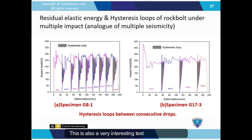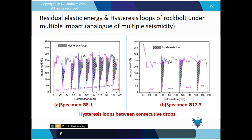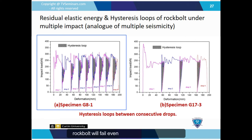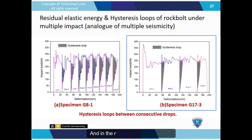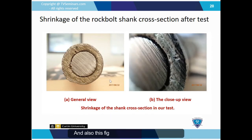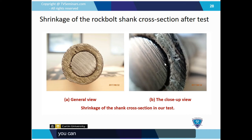This is a very interesting test result showing the amount of energy stored in the rock bolt at each drop. The left figure shows several drops on the G8 rock bolt, and at each stage, energy is stored in the rock bolt — meaning after several stages of energy storage, the rock bolt will eventually fail even under relatively low loading. The right view shows a 17 kJ energy impact with 3 drops; the left shows 8 kJ impact energy with 8 drops. The figures also show the rock bolt encapsulated in concrete or resin before the test, and after the test, how deformation reduces the bolt's diameter.